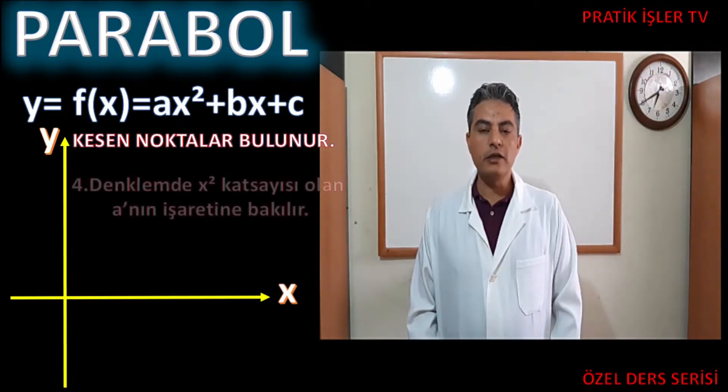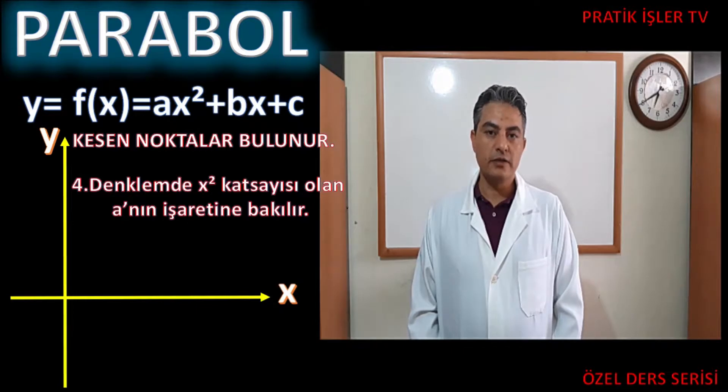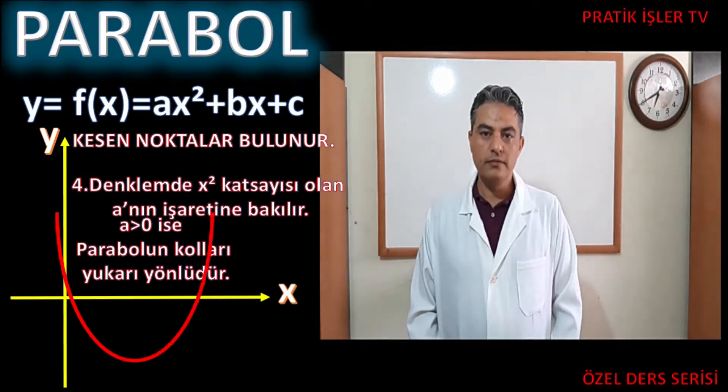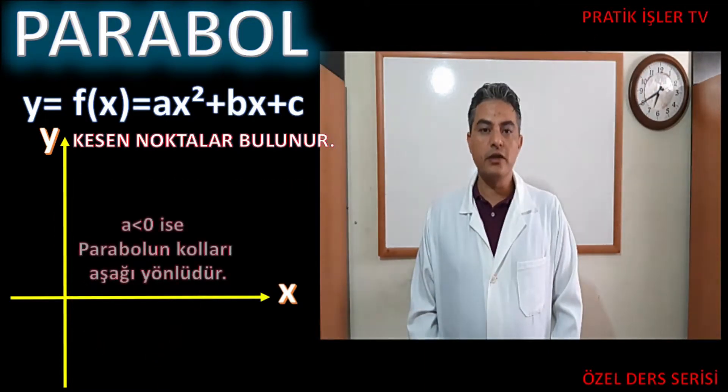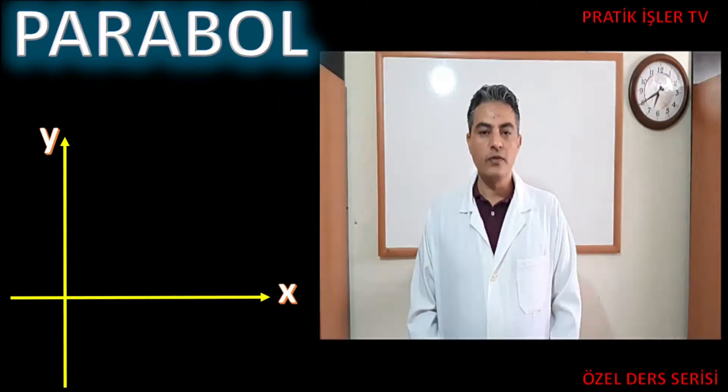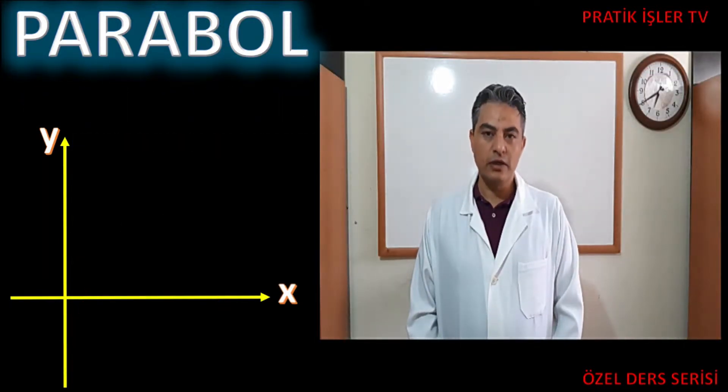Sorularda parabol x eksenini kesmiyor, x eksenin üstünde veya altında gibi ifadeler varsa anlayacağız ki burada bu denklemin deltası sıfırdan küçüktür. Parabolin grafiğini çizmede son durum ise denklemimizdeki a'nın işaretine bakarız. Eğer a'nın işareti sıfırdan büyükse kollar yukarı, eğer a'nın işareti sıfırdan küçükse kollar aşağı yönlidir.